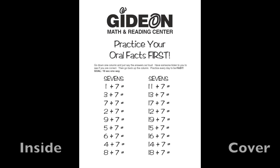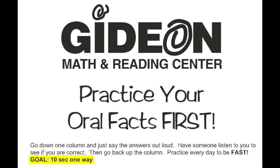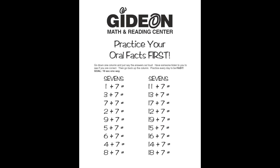Practice oral facts every day before your homework to warm up your brain and memorize your facts. To practice oral facts, go down one column and just say the answers out loud. Have someone listen to you to see if you are correct. Then go back up the column. Practice every day to be fast. Your goal is to say the answers one way in 10 seconds or less. Make sure you do both columns.